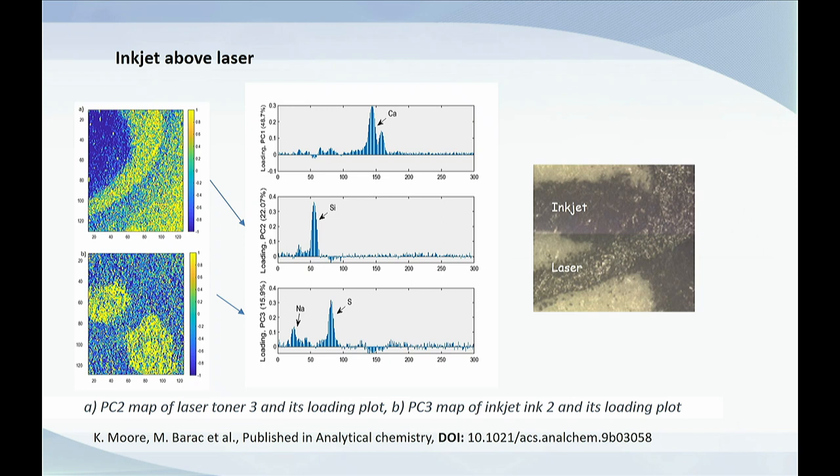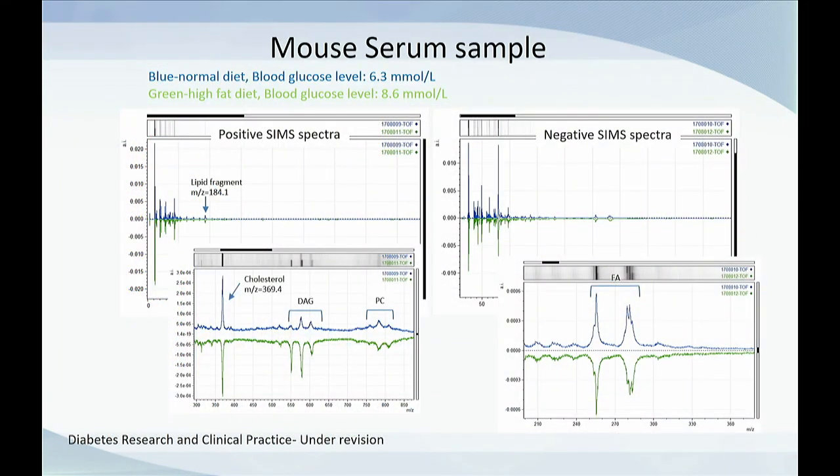And these are principal component maps. This is not a single element map, but principal component of both components that take both PIXE spectra and spectra from the MeV-SIMS.